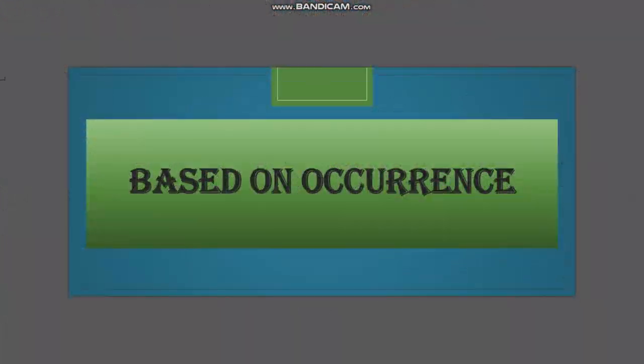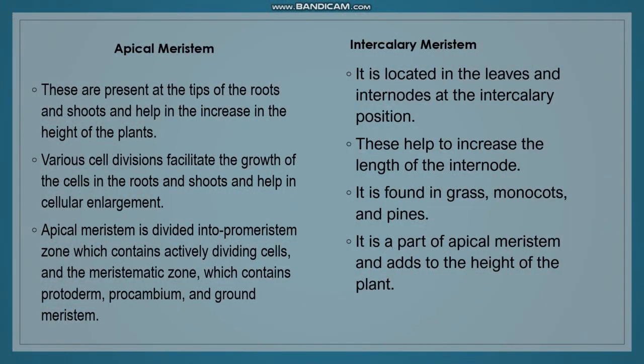Based on occurrence, meristematic tissues are classified as apical meristem, intercalary meristem, and lateral meristem. Apical meristem is present at the tips of roots and shoots. It helps increase the height of the plant. Various cell divisions facilitate growth in the roots and shoots and help in cellular enlargement.